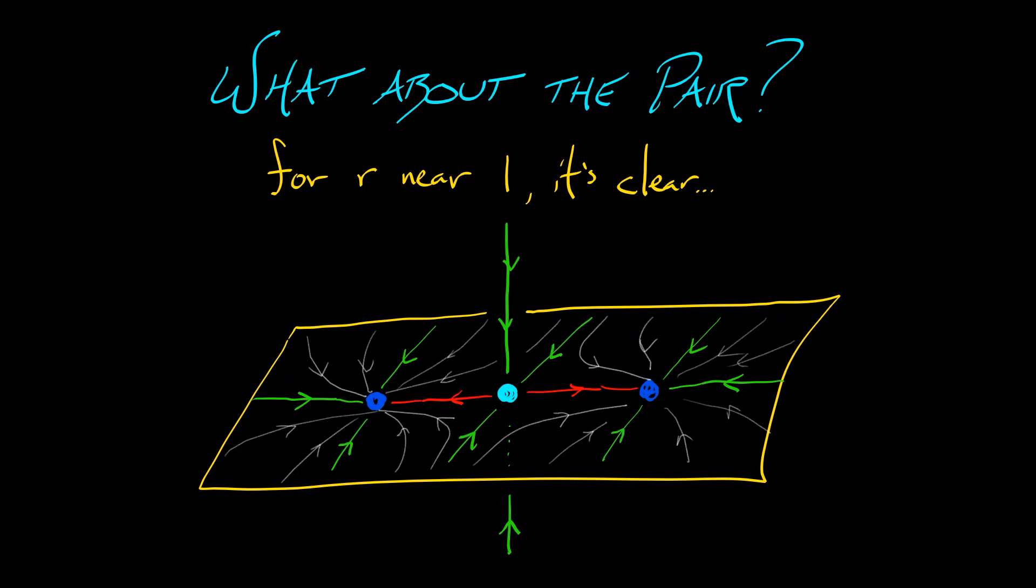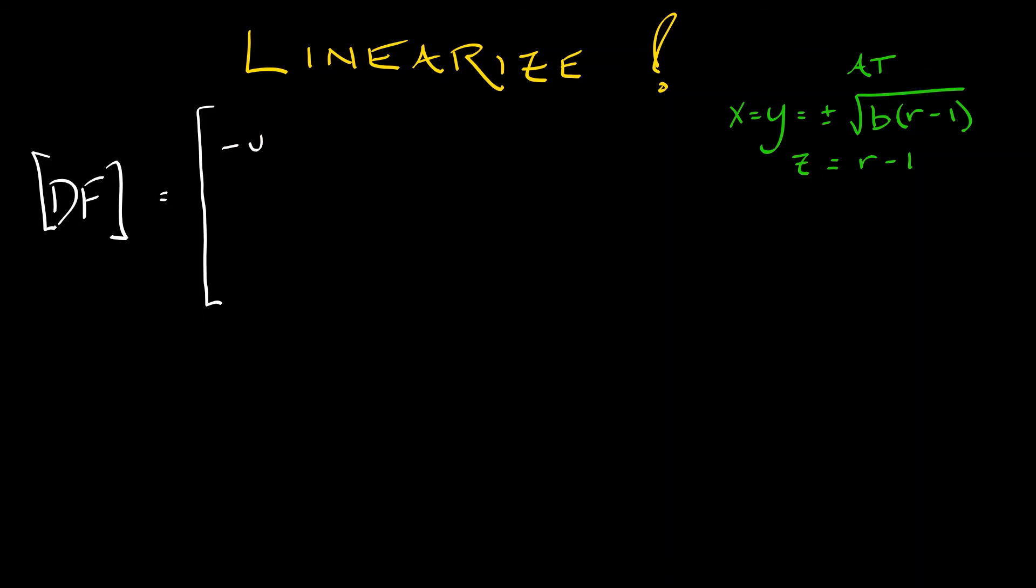And that's great. But what does that mean for larger values of r? Are there any additional changes or bifurcations at these points? Well, you know what to do.